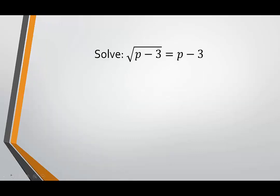Our first example: we have the square root of p minus 3 equals p minus 3. What we want to do is make sure that the radical, if possible, is by itself. It already is, so we're good to go. Now what we do is we can square both sides.